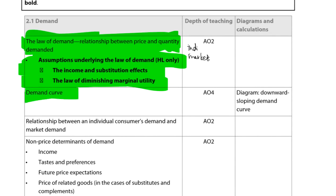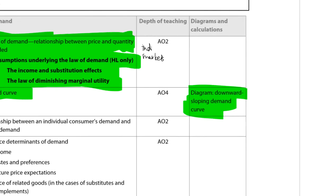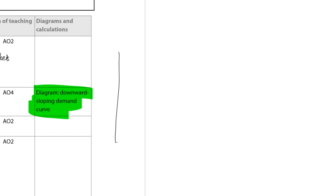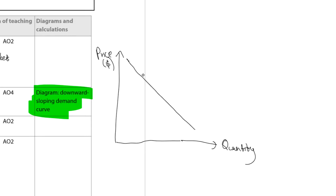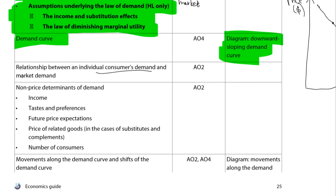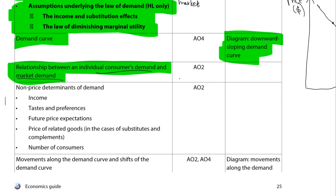Next, we have the demand curve — your bread and butter in economics. On the y-axis we have price, and on the x-axis we have quantity. In economics, the independent variable goes on the y-axis. As price increases, quantity decreases; as price decreases, quantity increases. That's the demand curve. Individual consumer demand is added up to get market demand — every individual's demand is accounted for to form the total market demand.